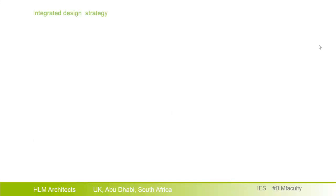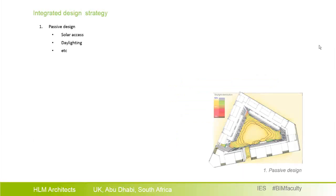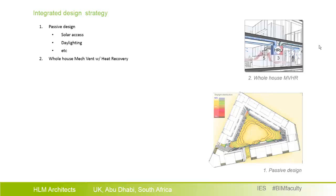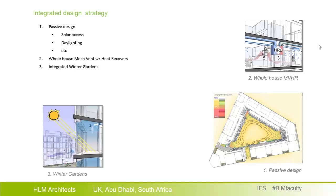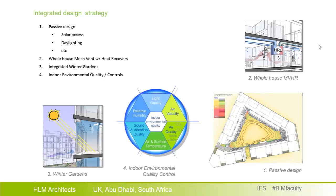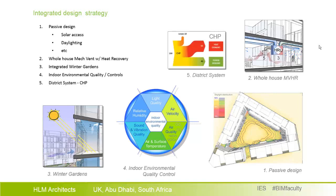The integrated design strategy is based first on a passive design strategy, including solar access distribution, daylighting, overshadowing control, interaction with the surrounding environment, and so on. Then we added whole house mechanical ventilation with heat recovery in every unit. Most units are equipped with a sun space — a winter garden — which provides additional amenity space and benefits in terms of thermal and energy control. These systems are connected and controlled on the basis of indoor environmental quality aspects, and finally the whole development is supplied by a community system fueled by a CHP.